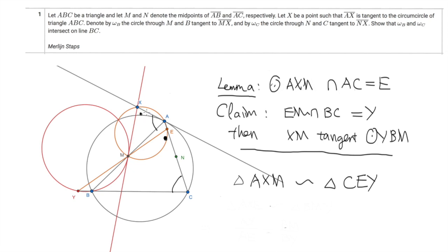In particular, the third angles of these triangles are equal: angle AMX equals angle XYB. This angle XMA equals the vertically opposite angle. And this equality of angles implies that line XM is tangent to the circle YBM. This concludes the proof of the lemma.